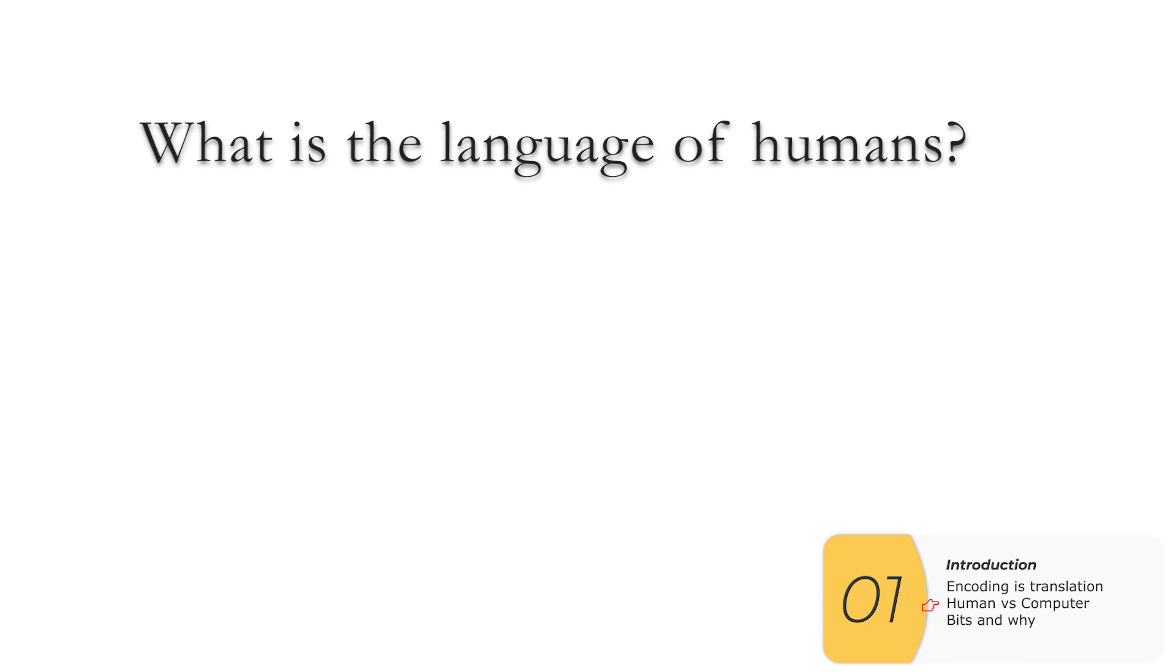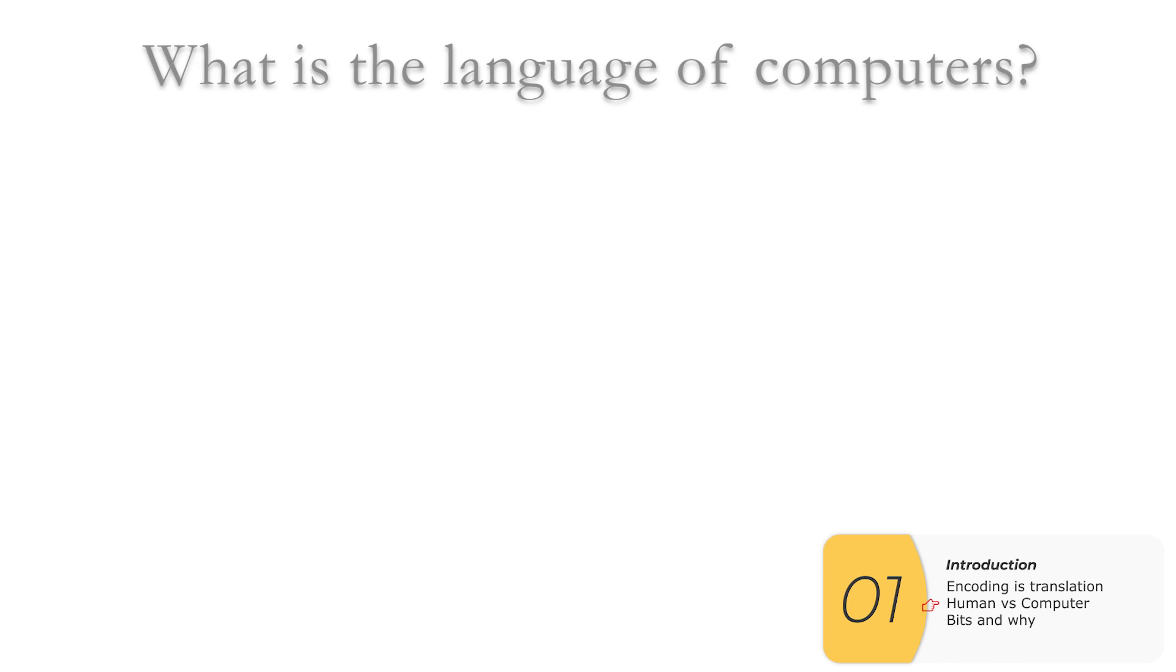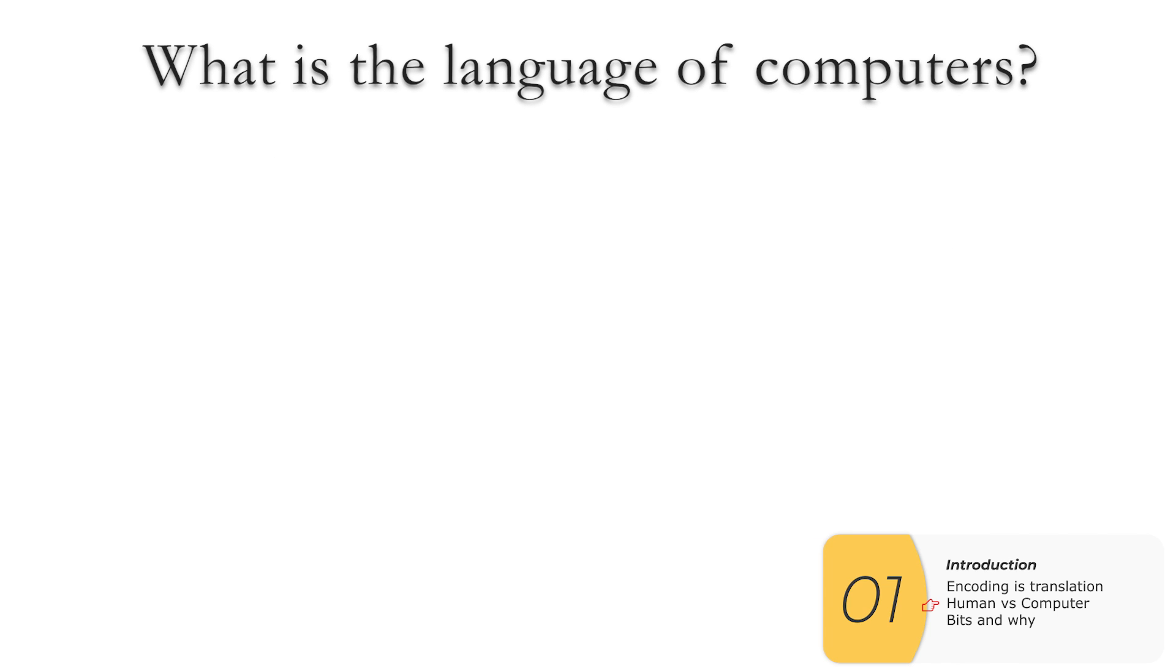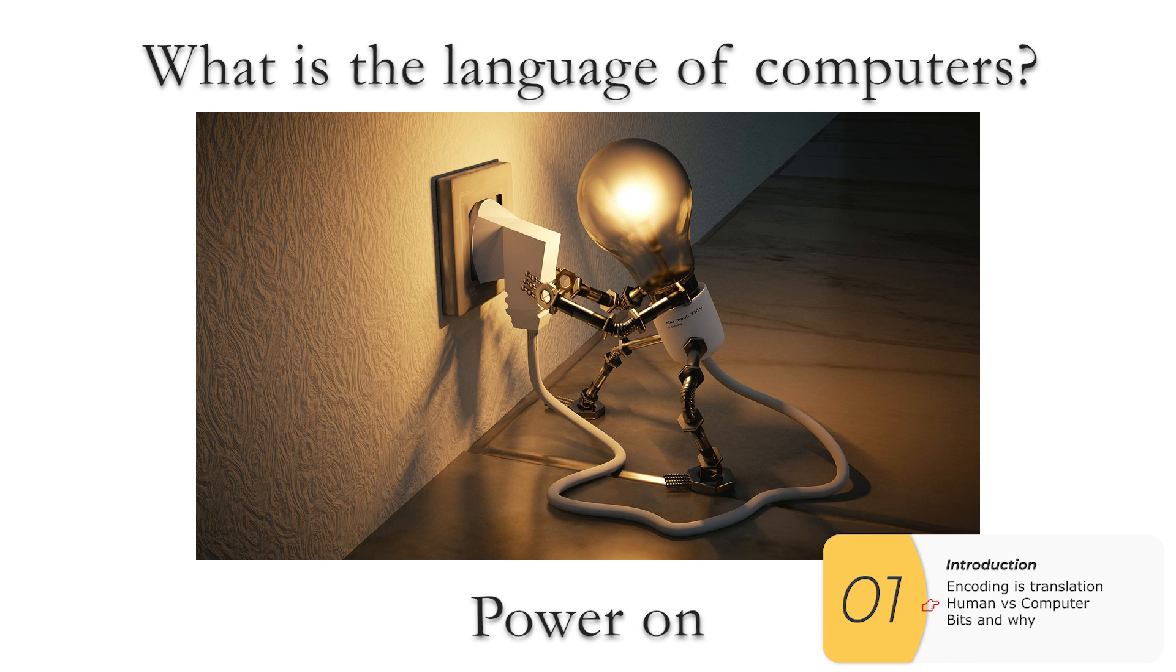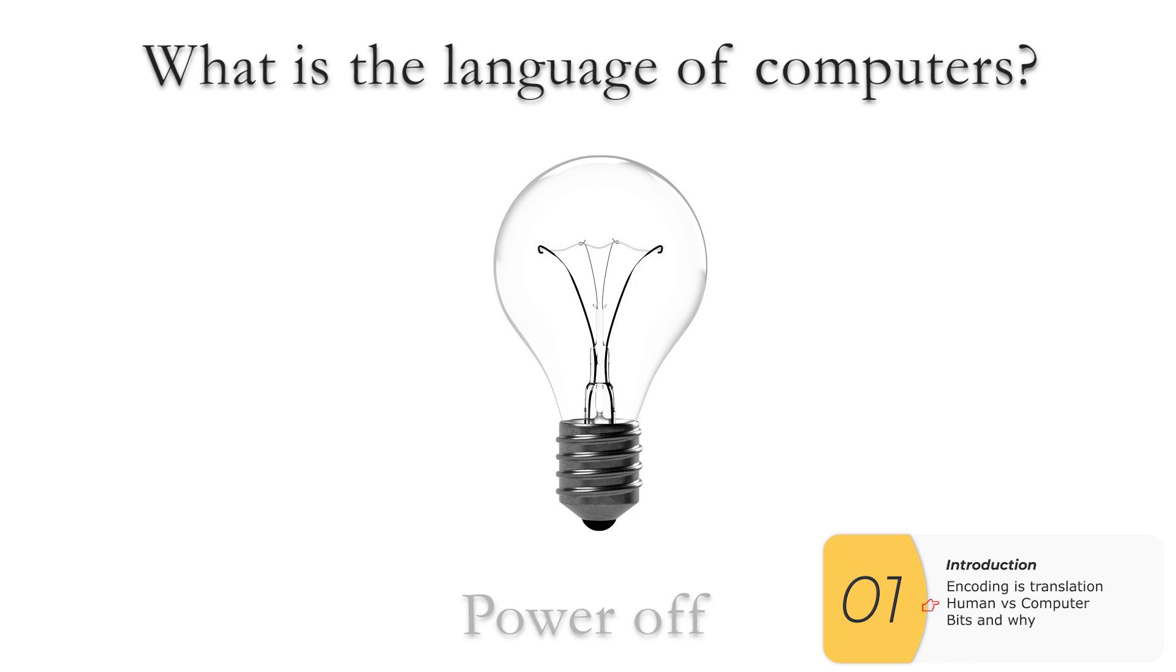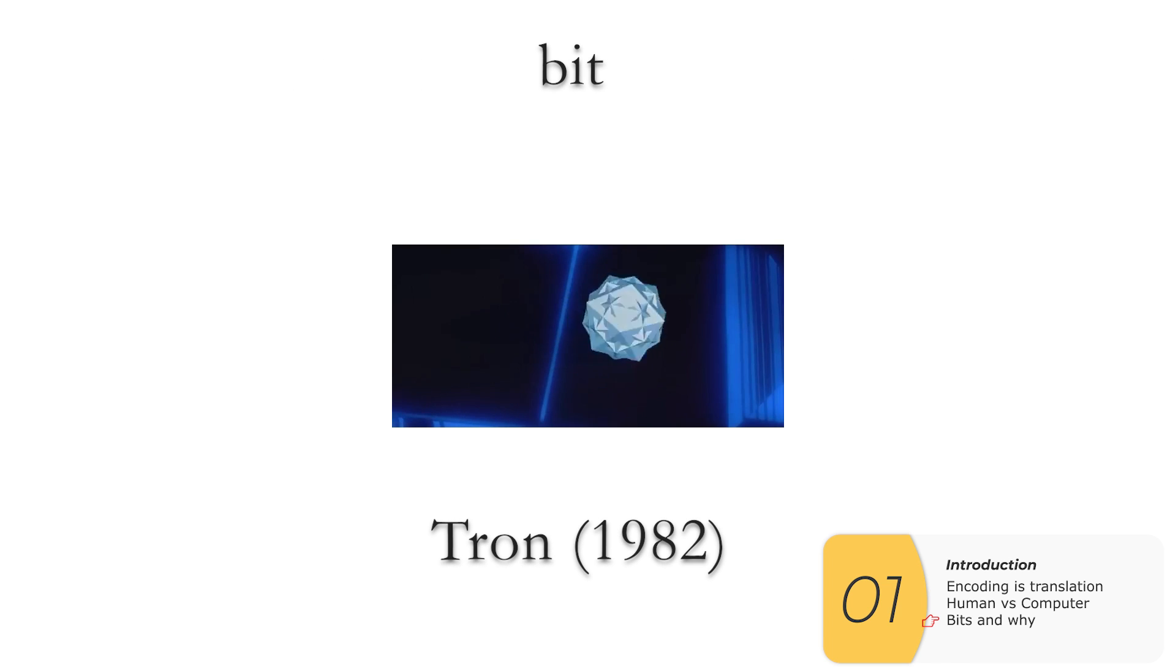So what is the language of humans? Well, we've mentioned it before, letters and numbers and that kind of stuff. What about the language of computers? Well, computers are made up of circuit boards and chips, and circuit boards and chips are made up of transistors, lots and lots of transistors. And all they know is power on and power off. That's all, nothing else, power on or power off, on or off.